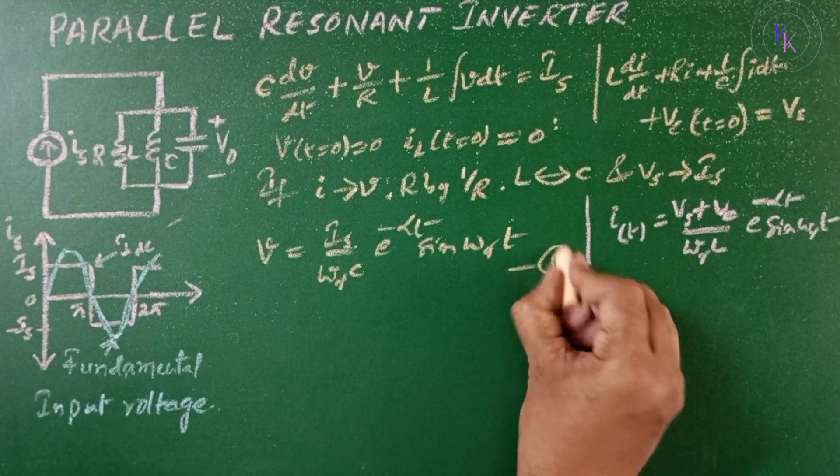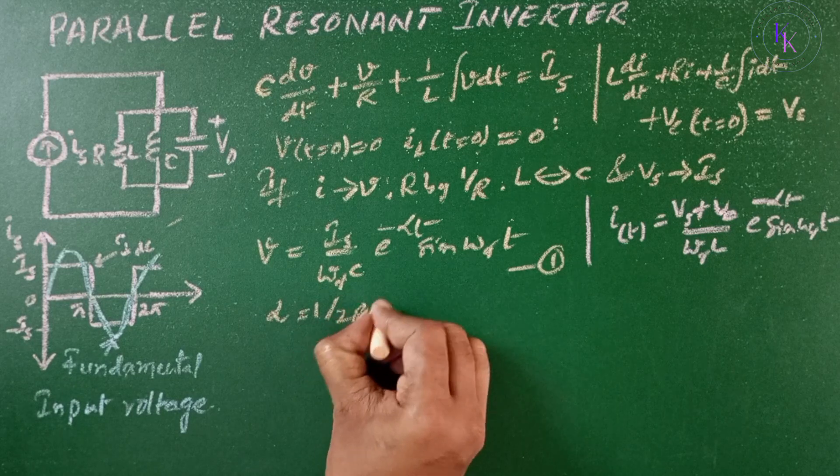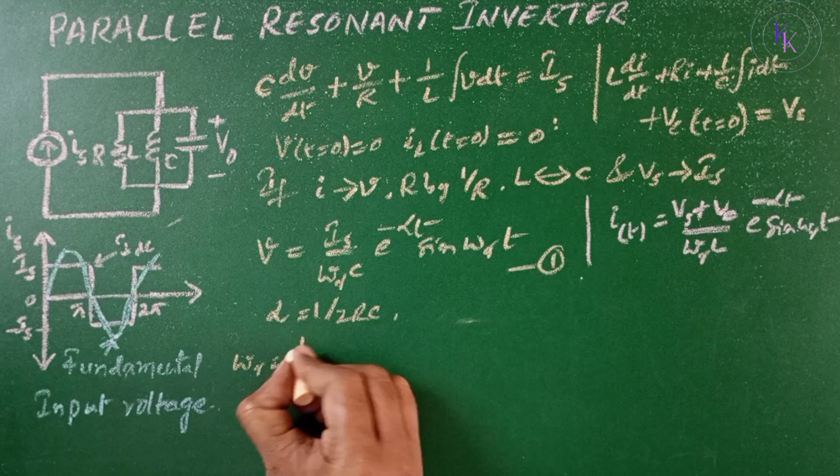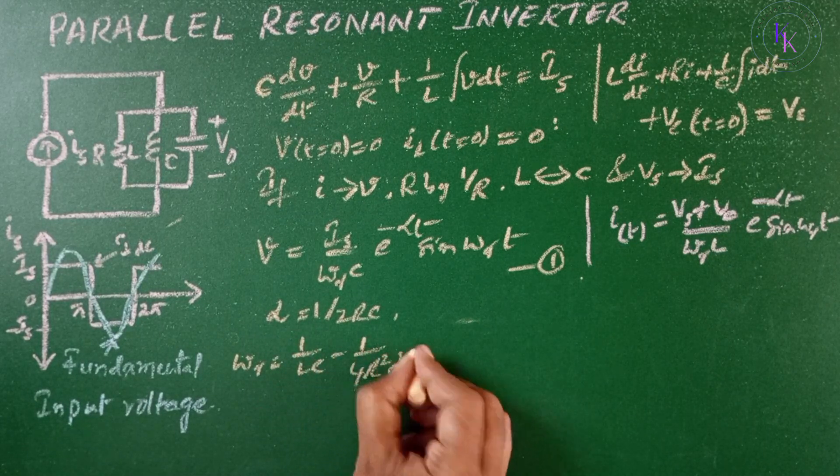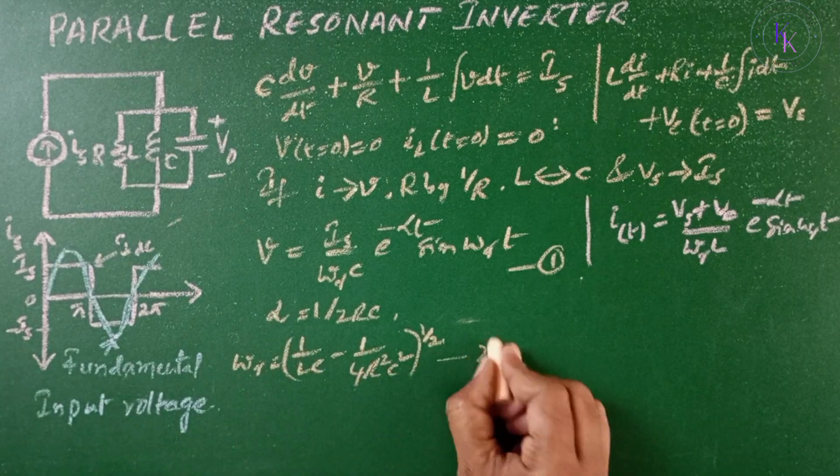Let this be equation 1, where α = 1/(2RC). The damped resonant frequency ωR = √(1/LC - 1/(4R²C²)), equation 2.